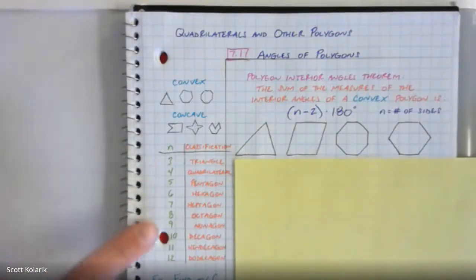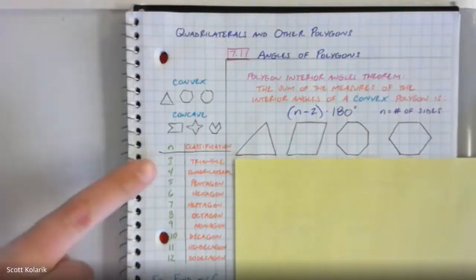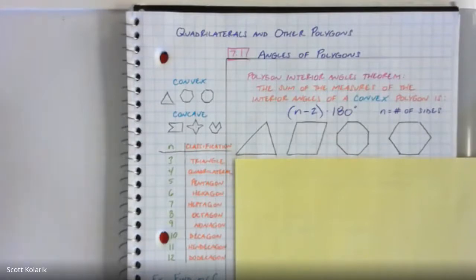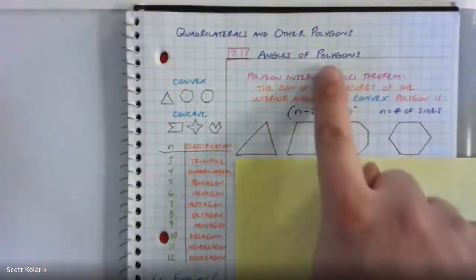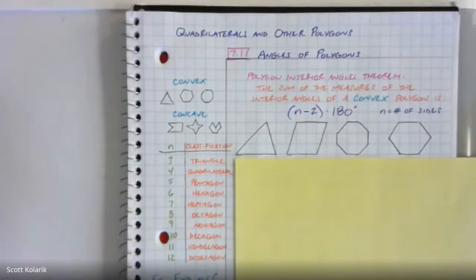It is possible to have more than 12 sides — we'd just refer to those with the number followed by '-gon.' For instance, a 94-sided figure would be called a 94-gon. 'Gon' is the Greek word for sides. It's impossible to have a geometric shape with fewer than three straight sides — two sides can't connect to form a closed shape, and a circle isn't considered a polygon since we're dealing with straight line segments.